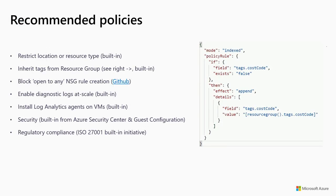This slide has been uploaded so I won't touch too much detail, but here are some popular policies customers have been using: restricting location or resource types like public IP addresses, tag-related items such as automatically inheriting tags from your resource group or appending a cost code tag, preventing open rules on network security groups, monitoring-related policies, and security and regulatory compliance.